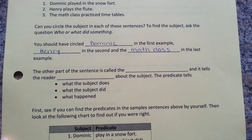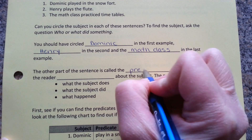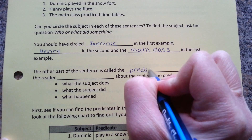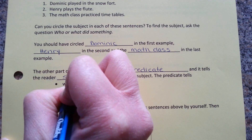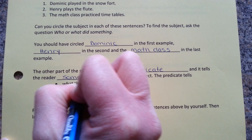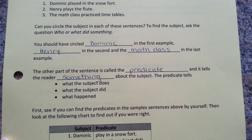The other part of the sentence is called the predicate, and it tells the reader something about the subject. The predicate tells what the subject does, what the subject did, or what happened.